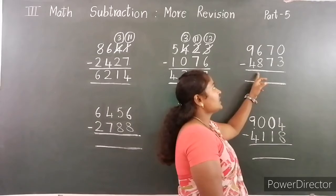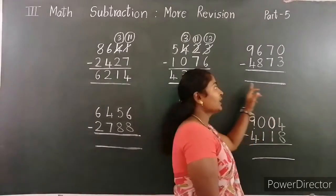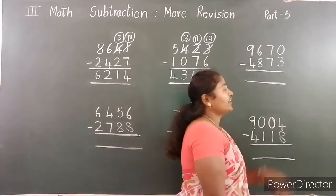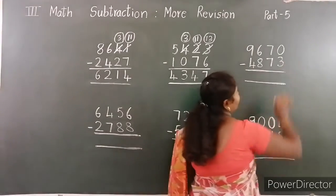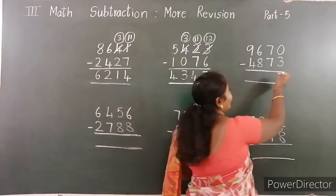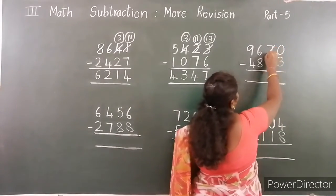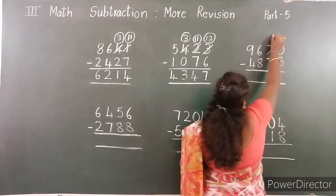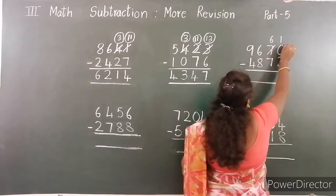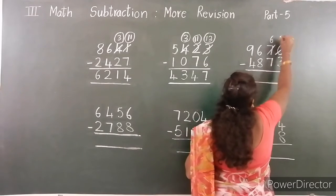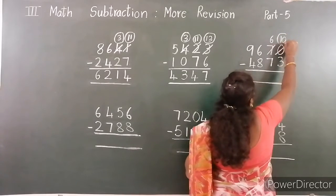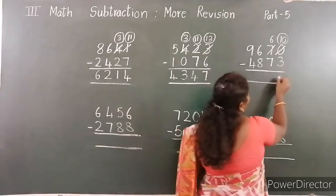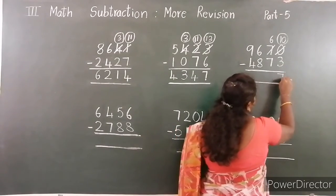Next example: 9,670 minus 4,873. Ones place: 0 is smaller than 3, so borrow from the next place. Here 6 left, now 10. 10 minus 3 — the difference is 7.